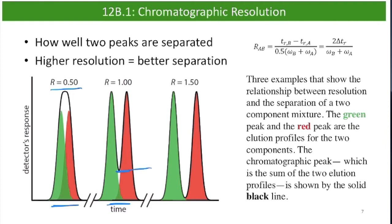With a resolution of 1, you can see two peaks and two different components, but the separation isn't very good because the valley between the peaks doesn't go back down to the baseline. Since it doesn't go all the way down, we can't accurately determine the peak area. At a resolution of 1.5, we almost have baseline resolution — the valley between the peaks is almost at the baseline — and this is the minimum resolution needed for any quantitative analysis with reasonable confidence.